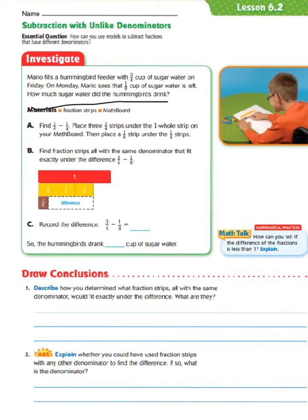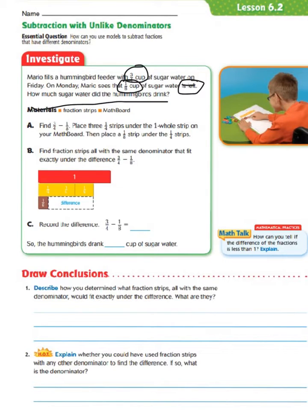Let's take a look at some of the other key items within our word problem. We notice a key word where it says 'is left,' and we know when we think of 'is left,' we have to think of subtraction. He started off with 3 fourths cups of sugar water on Friday and was left with 1 eighth cup on Monday.